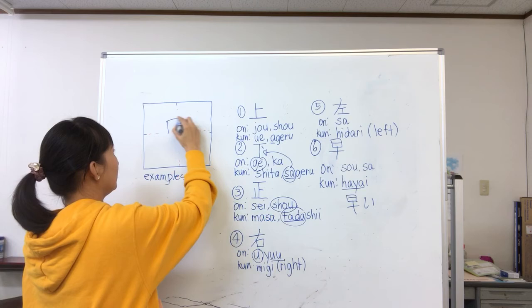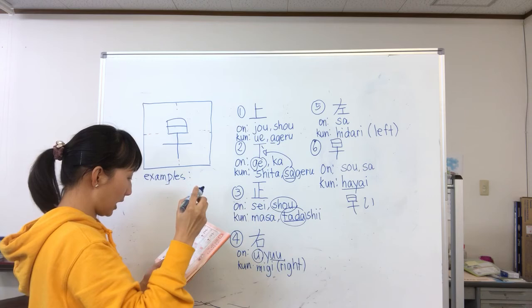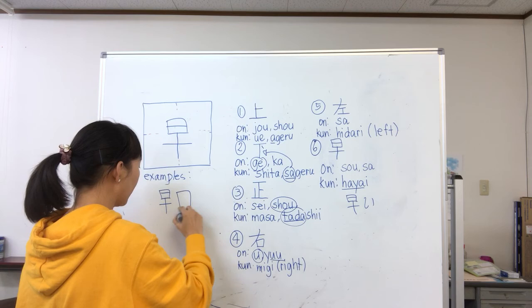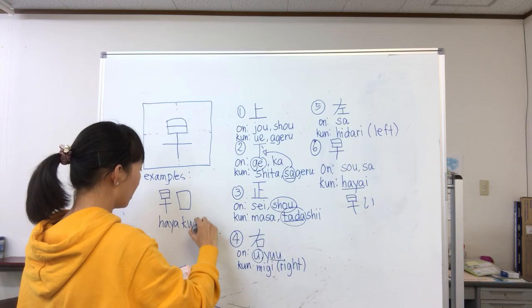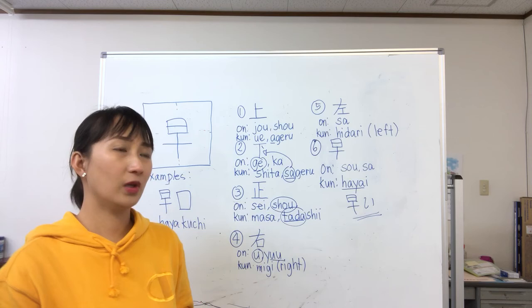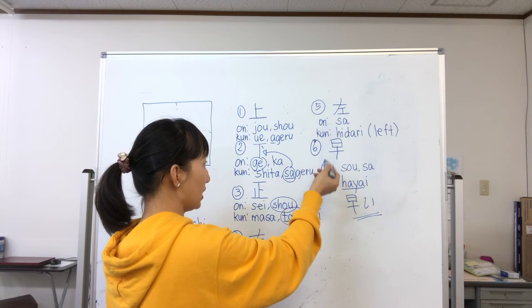The examples I have are: hayaku shite means to hurry or speak fast. Hayai means fast and can also mean early. For example, if your student came early you can say: kyou wa hayai desu ne — you are early today. So those are the examples for our sixth kanji. That's all for today — I hope you learned something from my video, see you soon. Goodbye.